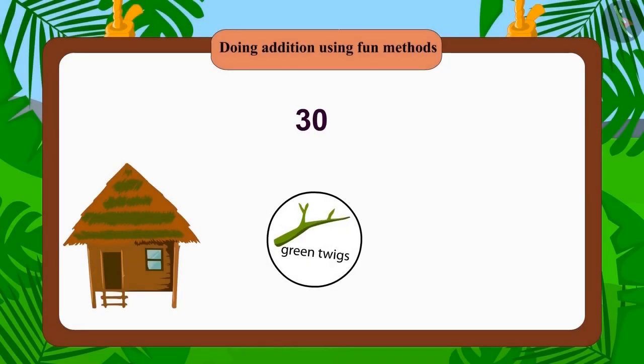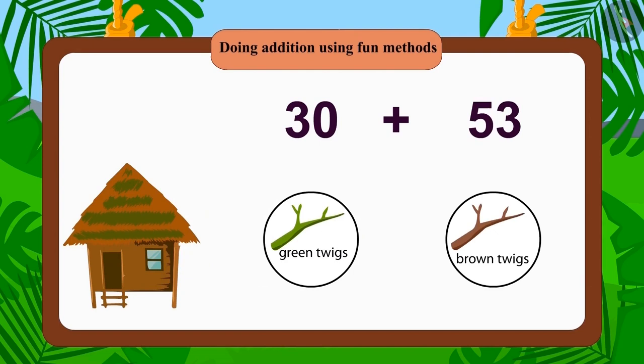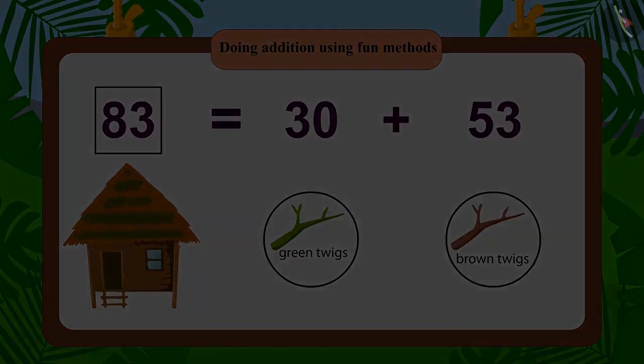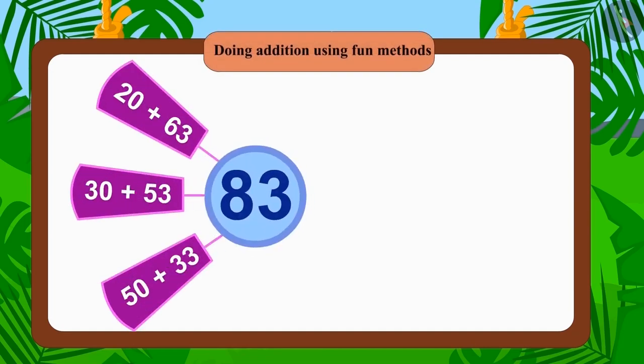So she rebuilt her house using 30 green twigs and 53 brown twigs. So how many thin twigs did Chanda use this time? Chanda again used only 83 thin twigs.